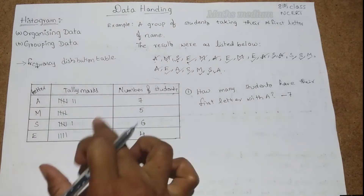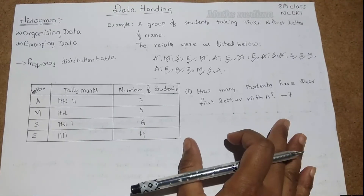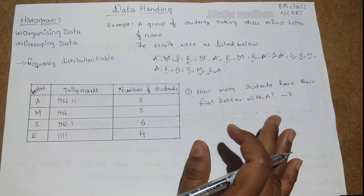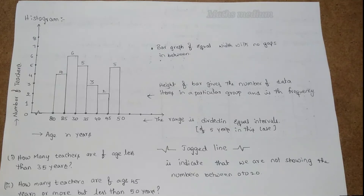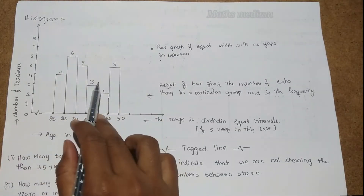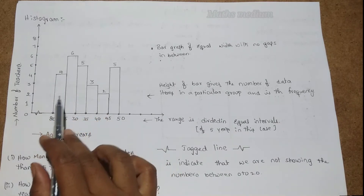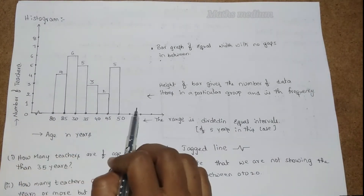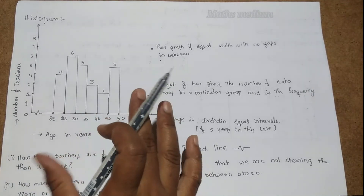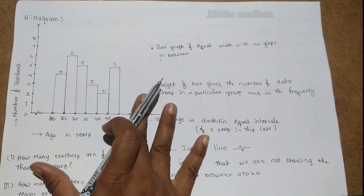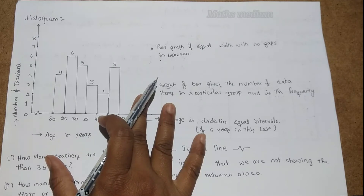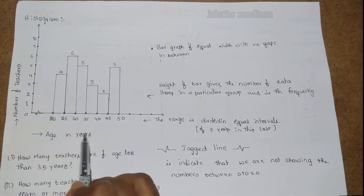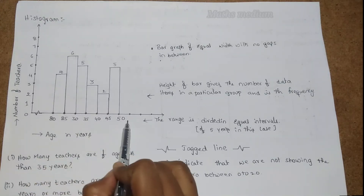Let's see how we represent a histogram. This is the pictorial representation of the histogram — for any data, any frequency table, we can plot a histogram. The axes here are: number of teachers on the Y-axis and age in years on the X-axis.